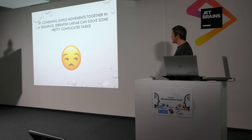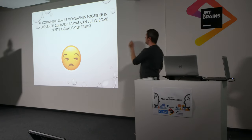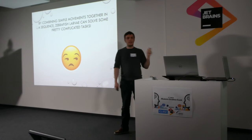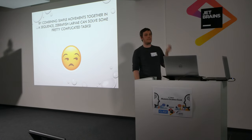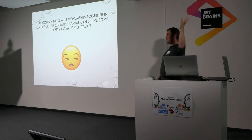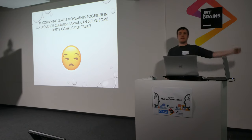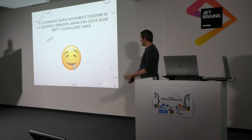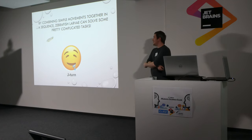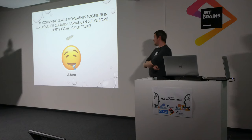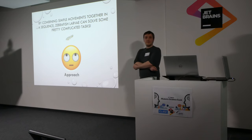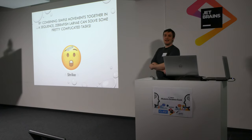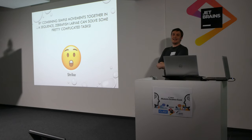So what have I told you? By combining these simple movements together in a sequence, these tiny zebrafish larvae are actually able to solve this pretty complicated task of catching a moving object in the water column. So if you're a zebrafish larva going about your everyday business, something tasty comes into your field of view, you're hungry — you do a J-turn and that moves the prey in front of you. It's in front of you but too far away, so you do an approach spoon, and then it's right there, and you do a strike. And if you're lucky, you get a tasty meal.